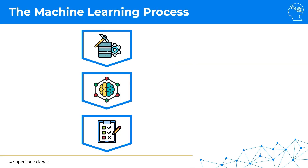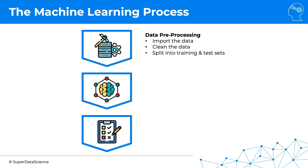This process has three main steps. The first one is called data pre-processing, and here we import the data, we clean the data, and we split the data into training and test sets.